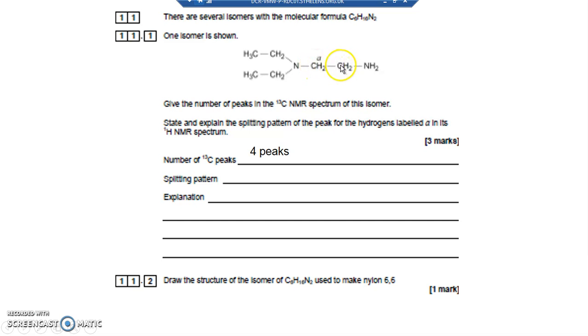So two hydrogens bonded onto an adjacent carbon means that that will be a triplet. The explanation is the neighboring carbon atom, the carbon bonded to the CH2, has two hydrogens on it.